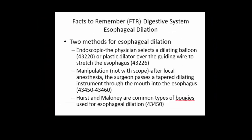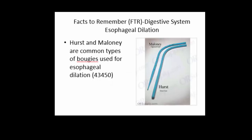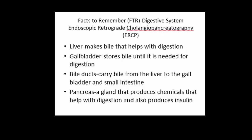Esophageal dilation has two methods. The first is endoscopic, where the physician inserts a balloon or a plastic dilator over a guide wire to stretch the esophagus. The second is a manipulation not using a scope, where the surgeon passes a tapered dilating instrument through the mouth into the esophagus. Bougies are types of instruments used for this. I found images on Google of the Maloney and the Hurst, which are common bougies used in esophageal dilation.